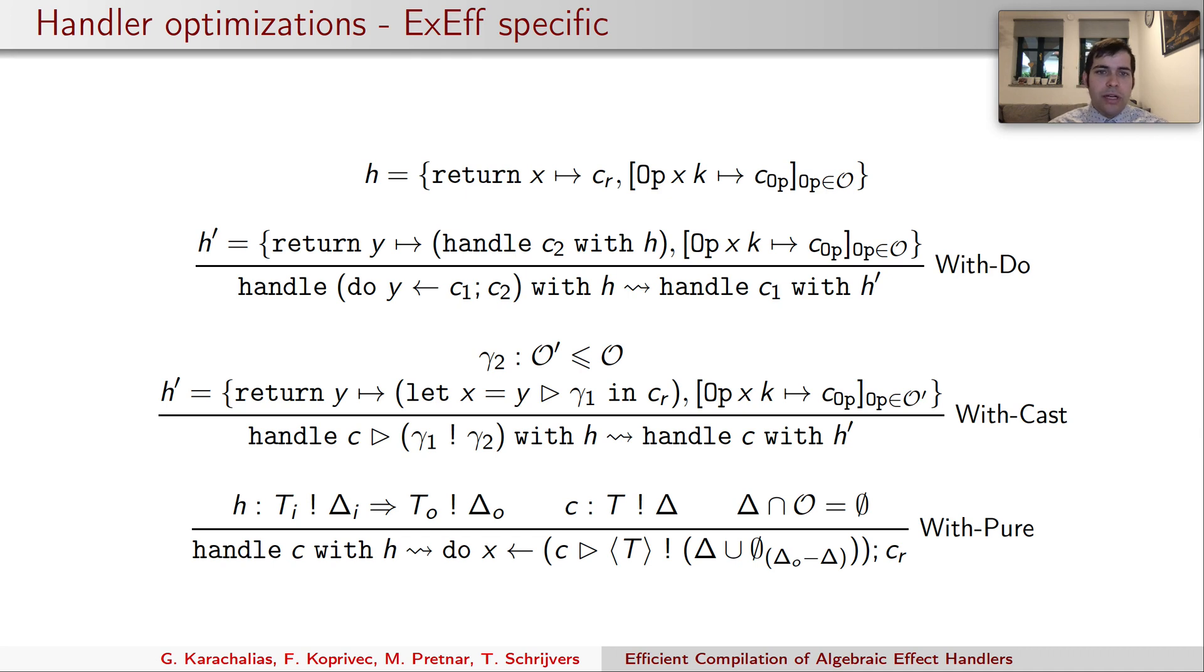But those three rules are critical. The first one allows us to inject sequencing directly into the handler return clause. This is very useful later when we'll have to inline the handler clauses and specialize functions. The second one allows us to handle casted computations and throw part of the coercions away. And the third one allows us to use type information to discard the handler when we are sure that it will never catch any effects.